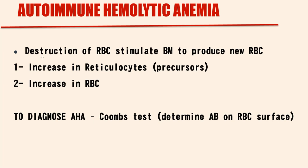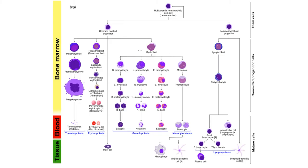In response to decreasing red blood cell count, bone marrow begins to produce more reticulocytes, from which red blood cells will be formed. As a result, in blood analysis we will see an increasing reticulocyte count. Red blood cells are produced from stem cells that differentiate into myeloid progenitor cells, which then undergo differentiation into erythroblasts. Erythroblasts mature into reticulocytes, and reticulocytes mature into red blood cells. So to increase red blood cell count in peripheral circulation, bone marrow initially produces more reticulocytes, and only then do reticulocytes mature into red blood cells, increasing the red blood cell count.